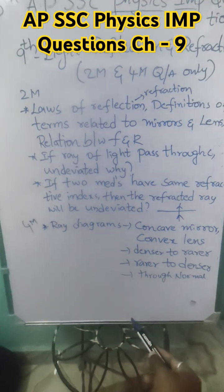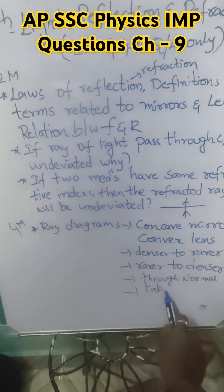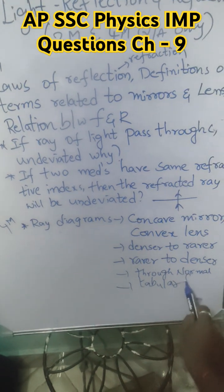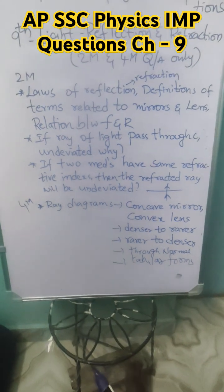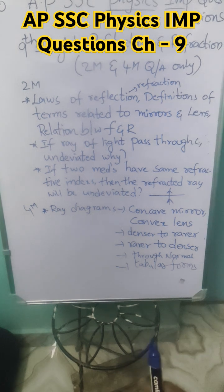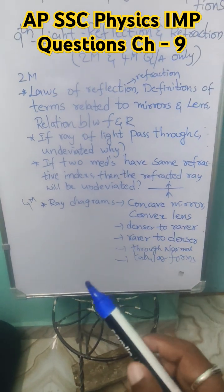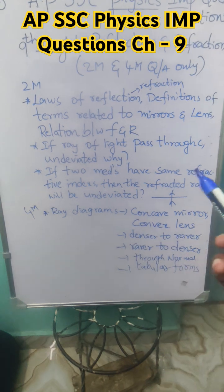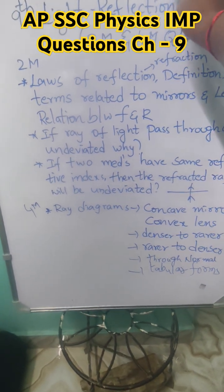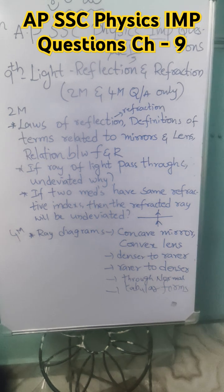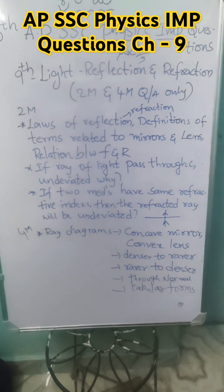One more important four-mark question is the tabular forms, where they will give the refractive index values and ask which medium is optically rarer, which is optically denser, and what is the relation between the refractive index and speed of light — mu is inversely proportional to speed (1/v). The SI unit of refractive index has no units.